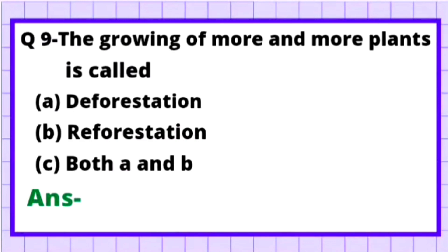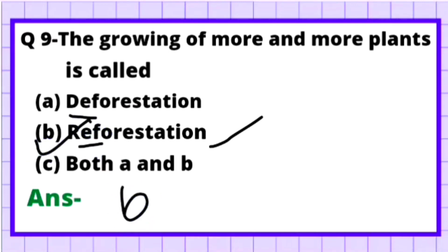Question 9: The growing of more and more plants is called — Option A: Deforestation, Option B: Reforestation. The process of growing more plants is called reforestation. Deforestation means to remove trees, which is a negative term. So the correct answer is Option B — Reforestation.